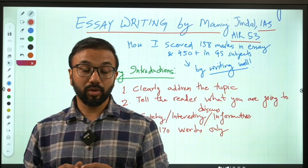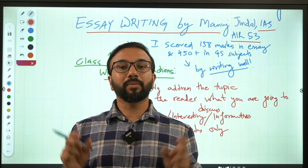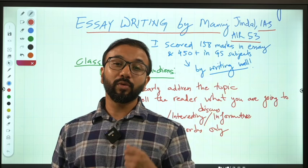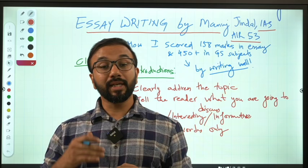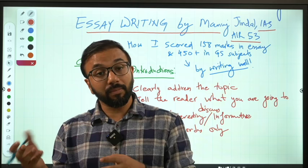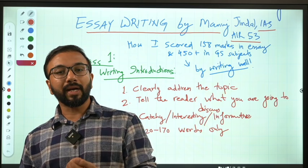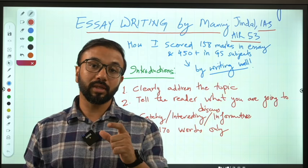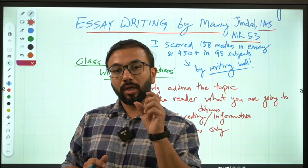Let's say the essay topic asked in the 2019 exam — Section B: 'Biased media is a real threat to Indian democracy.' Now how do you understand this topic before writing the introduction? You have to do some brainstorming and rough work. Take down the different keywords of that topic: media, Indian democracy, and biased.